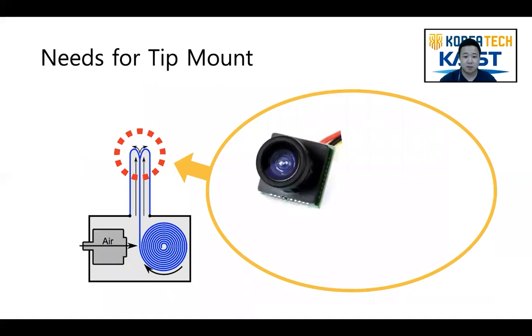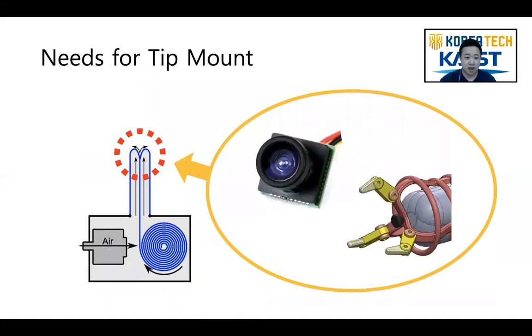To add the sensing ability at the tip of the soft-growing robot and to interact with the environment, developing a tip mount is essential and it will greatly expand soft-growing robots' usefulness.